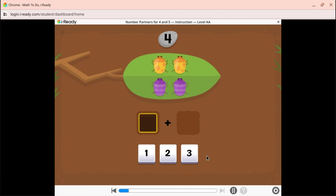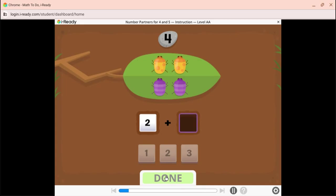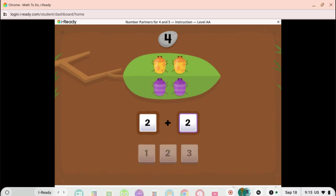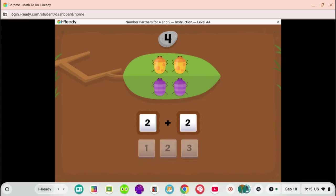Let's take a look at a group of four bugs. How many yellow bugs are there? Choose the correct number. There are two yellow bugs. How many purple bugs are there? There are two purple bugs. Two yellow bugs and two purple bugs is four bugs. Two and two are number partners for four.